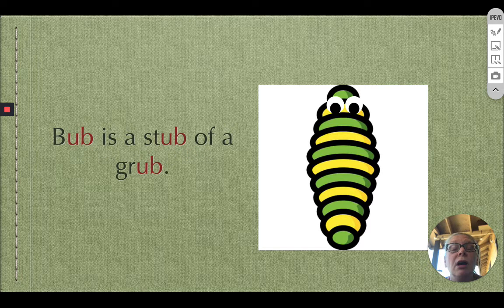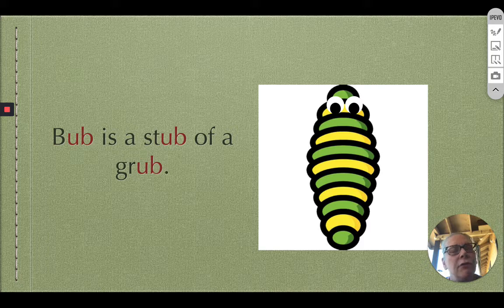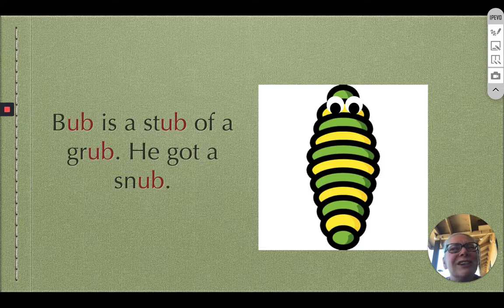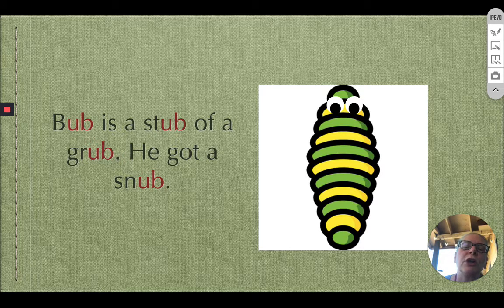Bub is a stub of a grub, which means he's not very big. Bub is a stub of a grub. He got a snub, which means people didn't give him much attention. They ignored him.